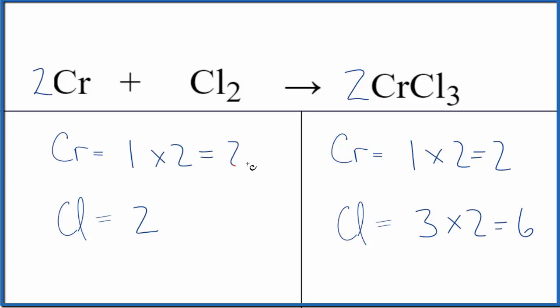That's balanced, and for the chlorine we need six. Let's put a three here. Two times three, that gives us six, and we're done. This equation is balanced.